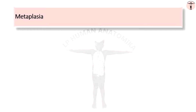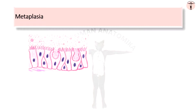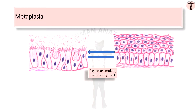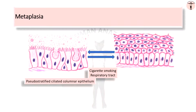Under certain abnormal conditions, one type of epithelial tissue may undergo transformation into another type. This reversible replacement of one adult cell type with another is called metaplasia, and it occurs due to chronic irritation. This transformation is not malignant, but if the irritation of the metaplastic epithelium continues, it may become malignant. For example, cigarette smoking causes metaplasia in the respiratory tract, where pseudo-stratified ciliated columnar epithelium is replaced by stratified squamous epithelium.